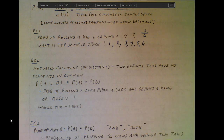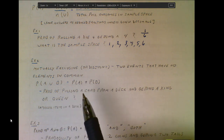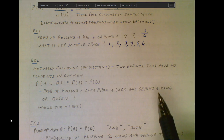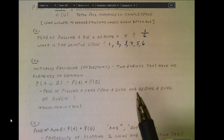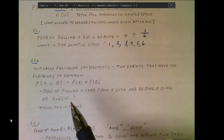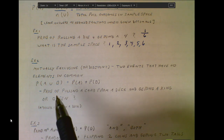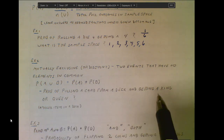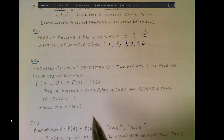Mutually exclusive events, also called disjoint events, are any two events that have no elements in common. A good example: what's the probability of pulling a card from a deck and getting a king or a queen? There are no cards that are both a king and a queen at the same time, so these events are mutually exclusive.